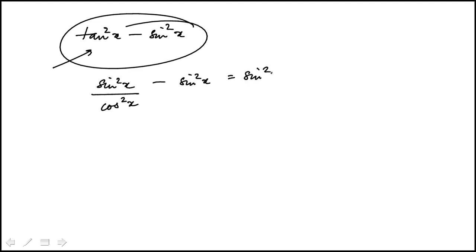And if I factor sine square x, this becomes 1 over cosine square x minus 1. Now I'm going to combine this term, so that's 1 minus cosine square x over cosine square x.